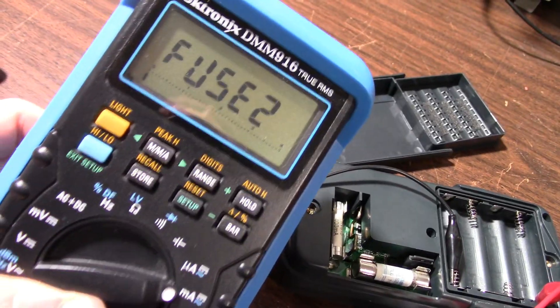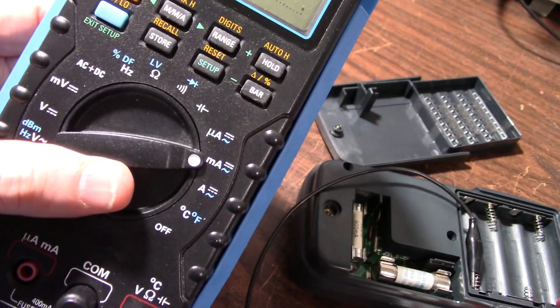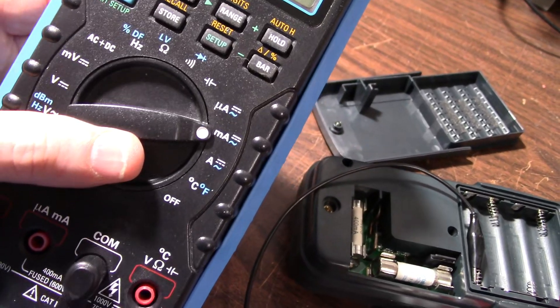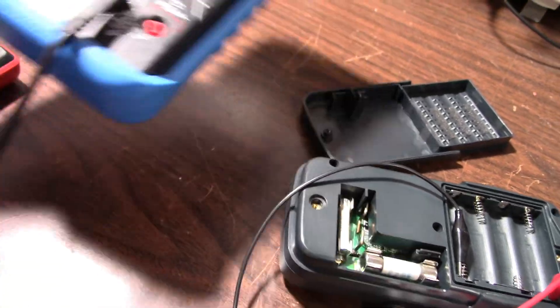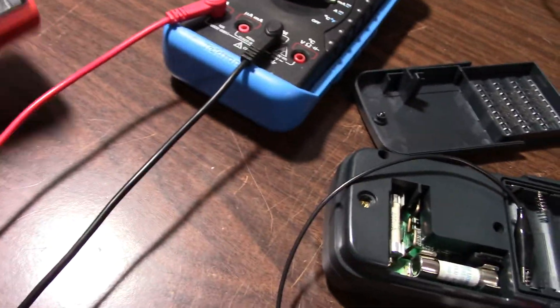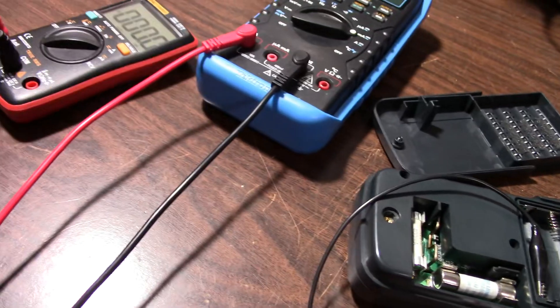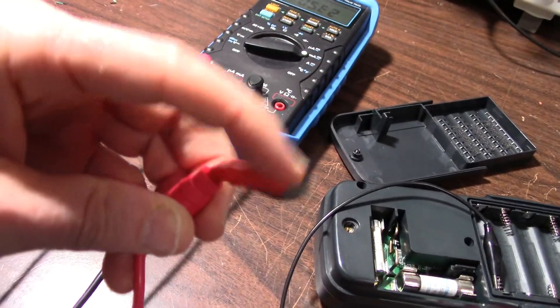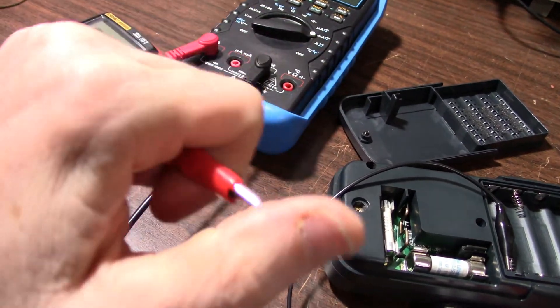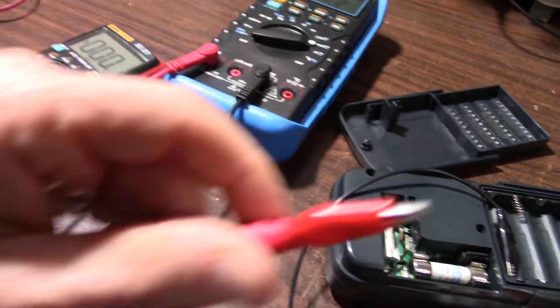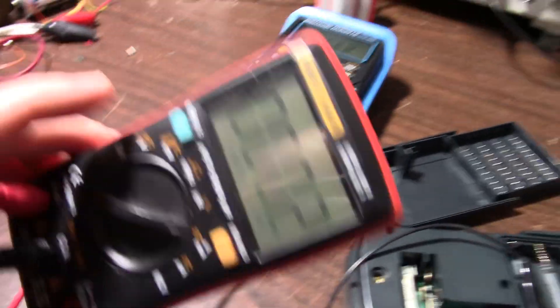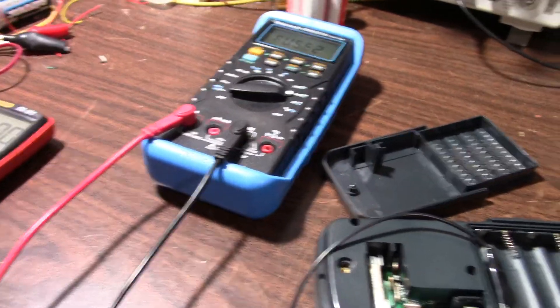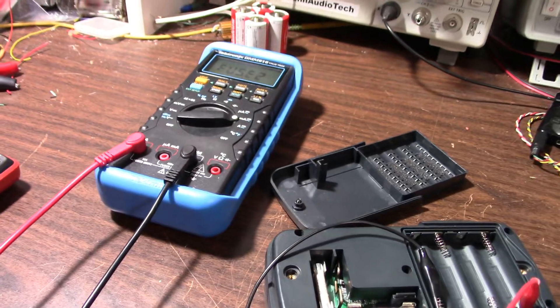This thing says fuse 2, must be the fuse for the milliamp mode, is out. Not getting continuity with this. And that thing's broke. I don't know what happened. This is lovely Chinese stuff. Not having good luck with meters here. I need to get something going here real quick.